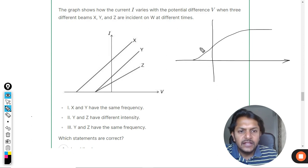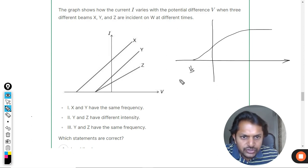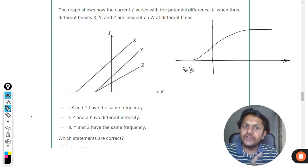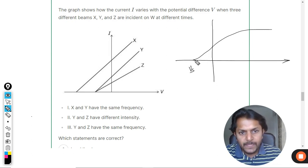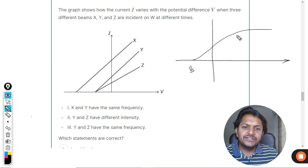So stopping potential shows you about the frequency, like what is the frequency that you were using. And now what you do is, we change the intensity.